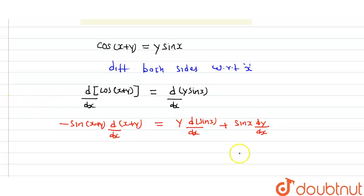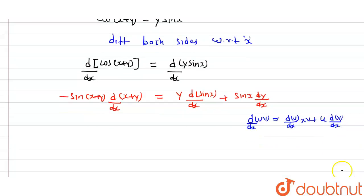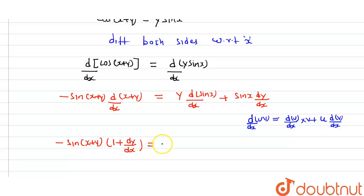As we know, differentiation of u·v with respect to x equals (du/dx)·v + u·(dv/dx). So from here: minus sin(x + y) into (1 + dy/dx) equals y·cos(x) + sin(x)·(dy/dx).